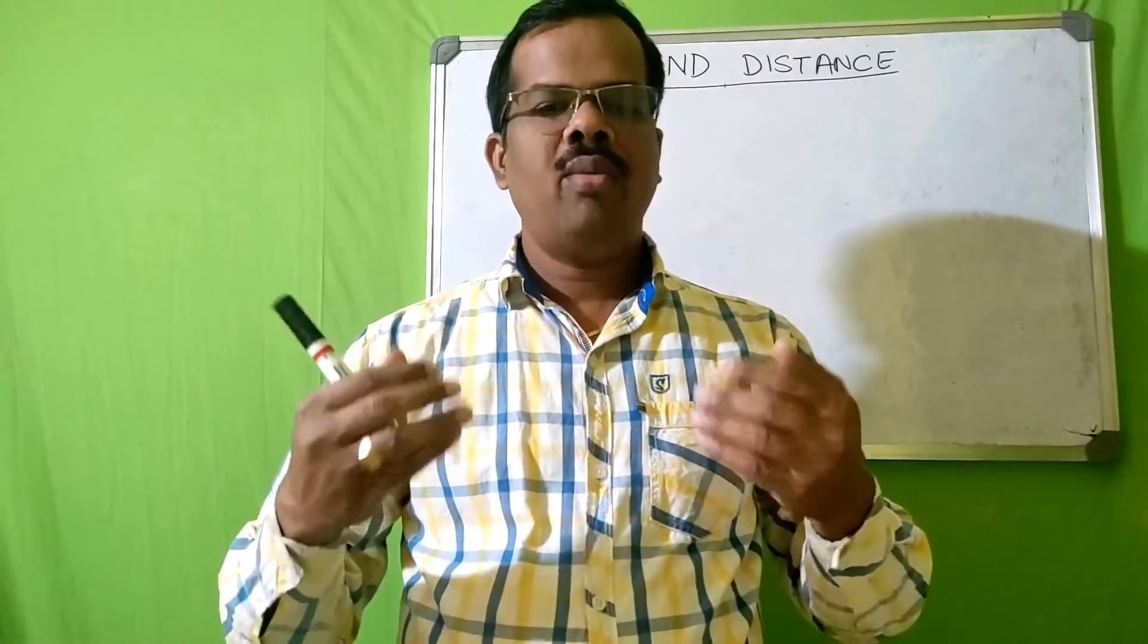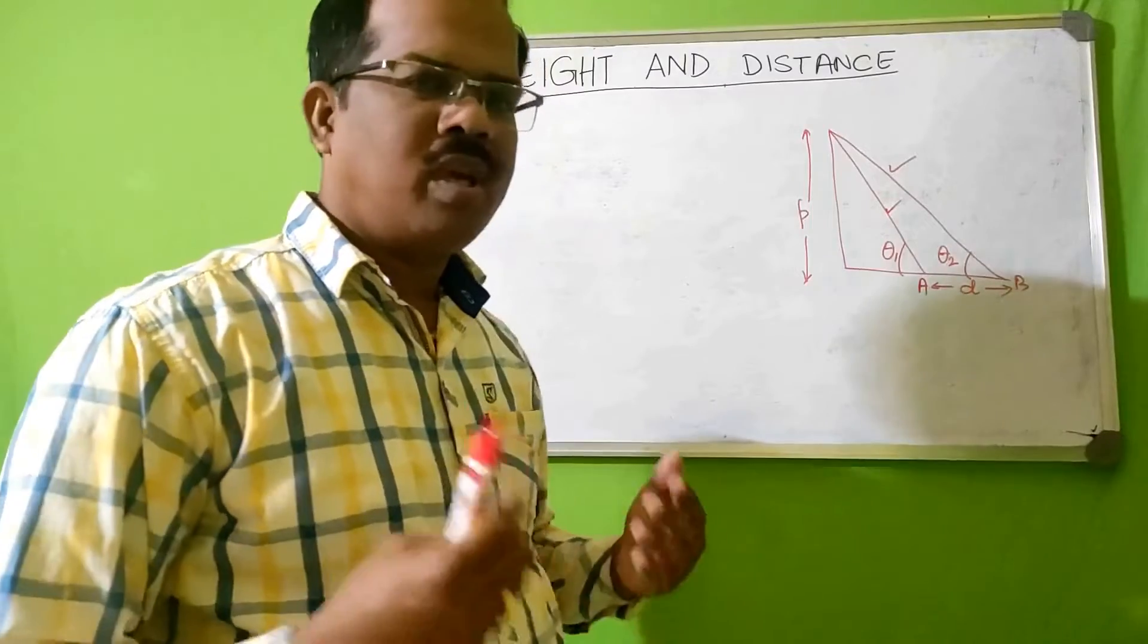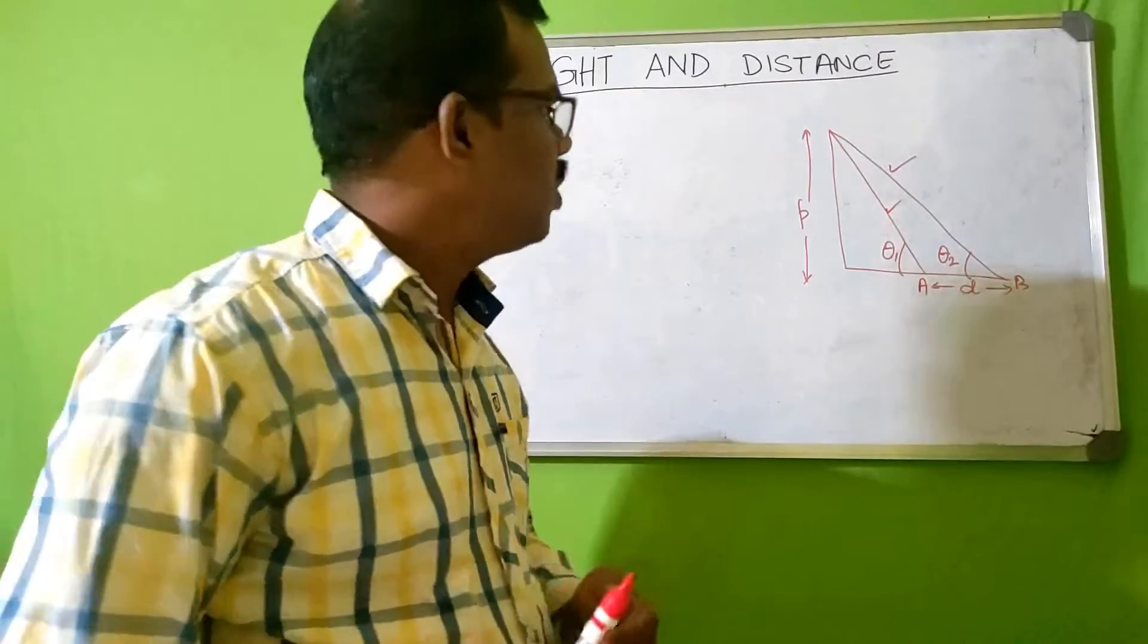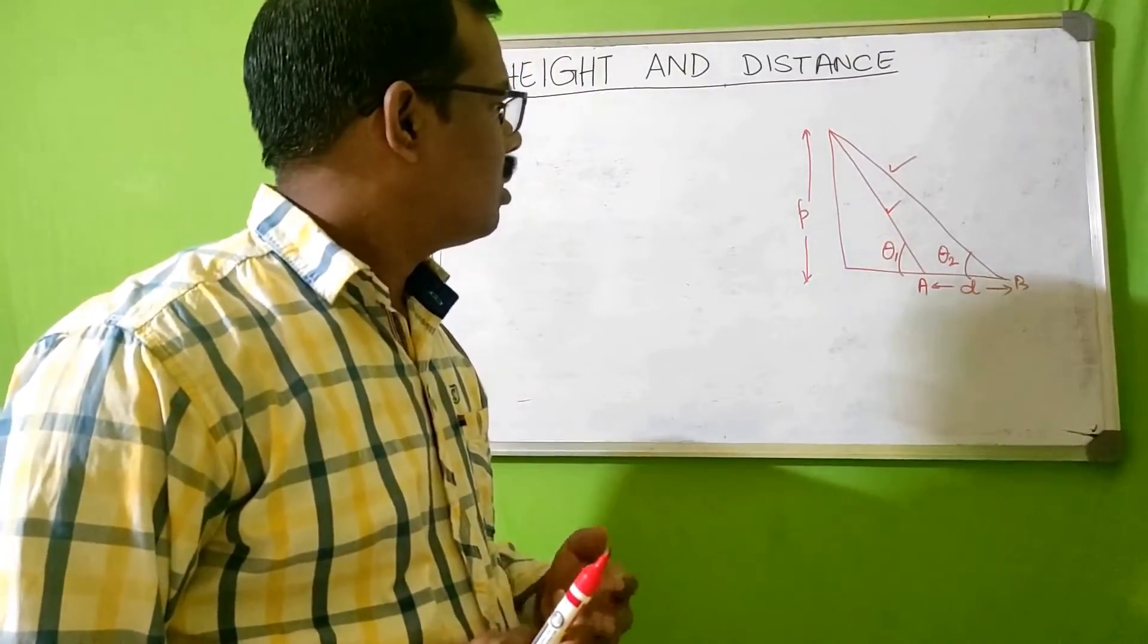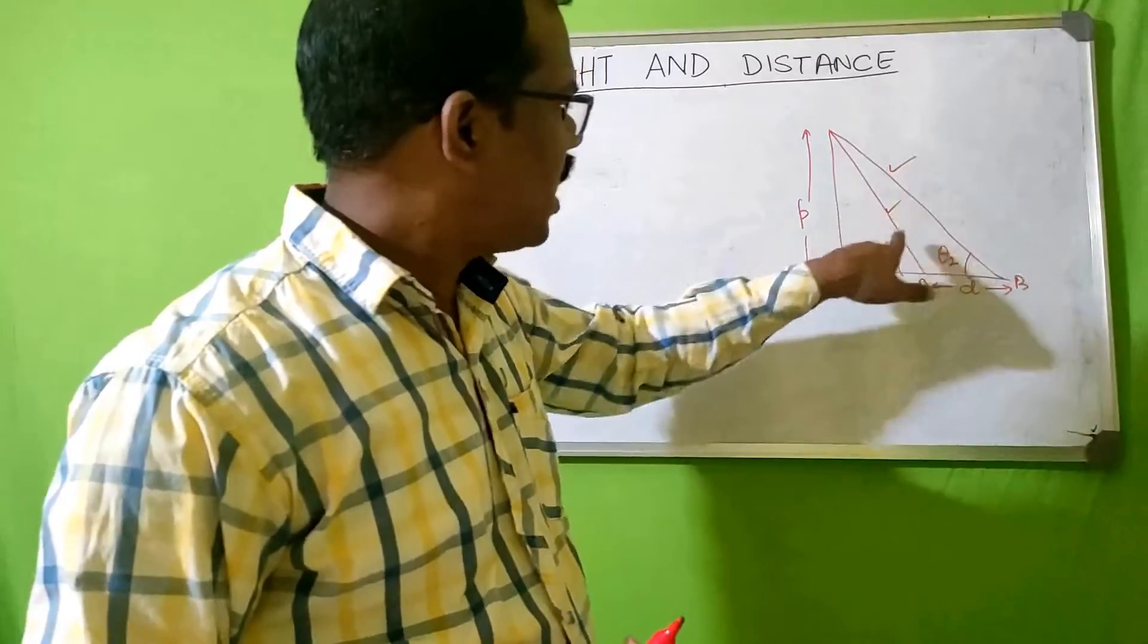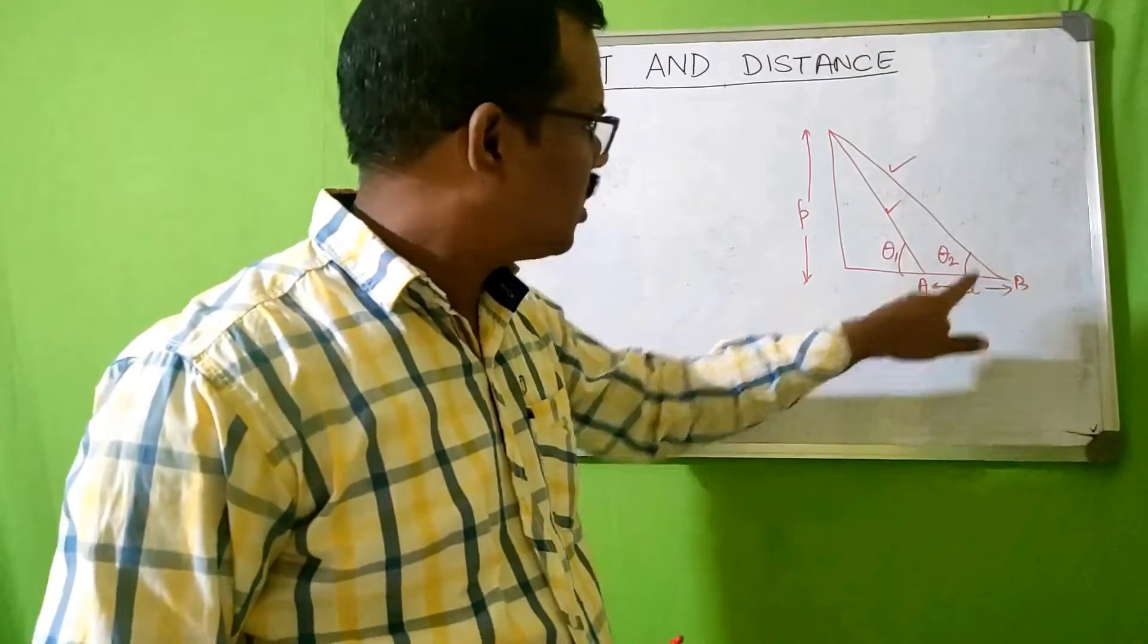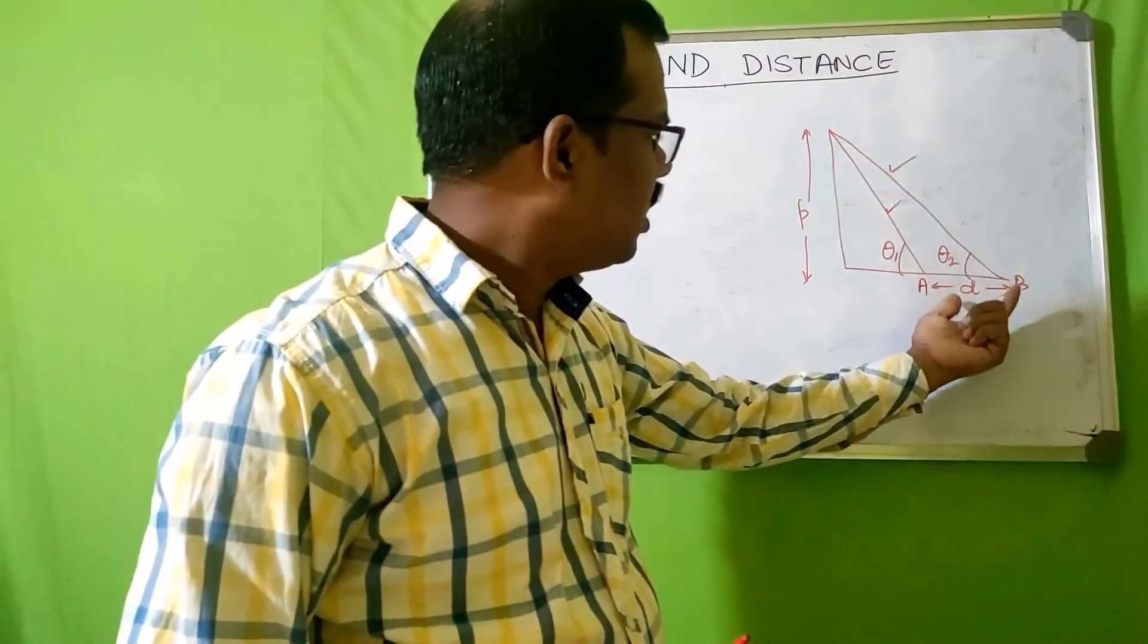Welcome to another session. We will learn about certain tricks on height and distance. If you are given a problem where the diagram comes something like this, where you will have two lines of sides, one and two, two angles of elevation theta one and theta two, and you will be given the distance between point A and point B.